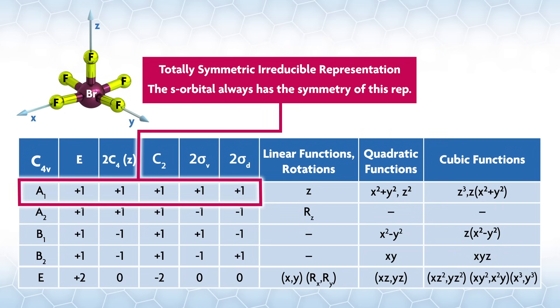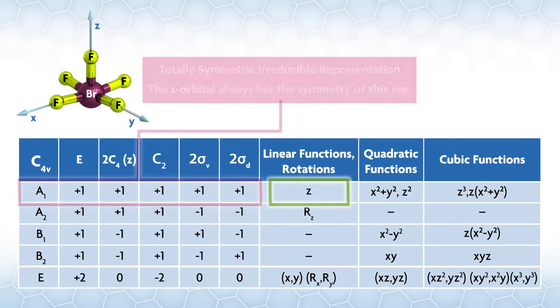The first irreducible representation has all ones across the different classes and is called the totally symmetric irreducible representation. The s orbital always has the symmetry of this rep.